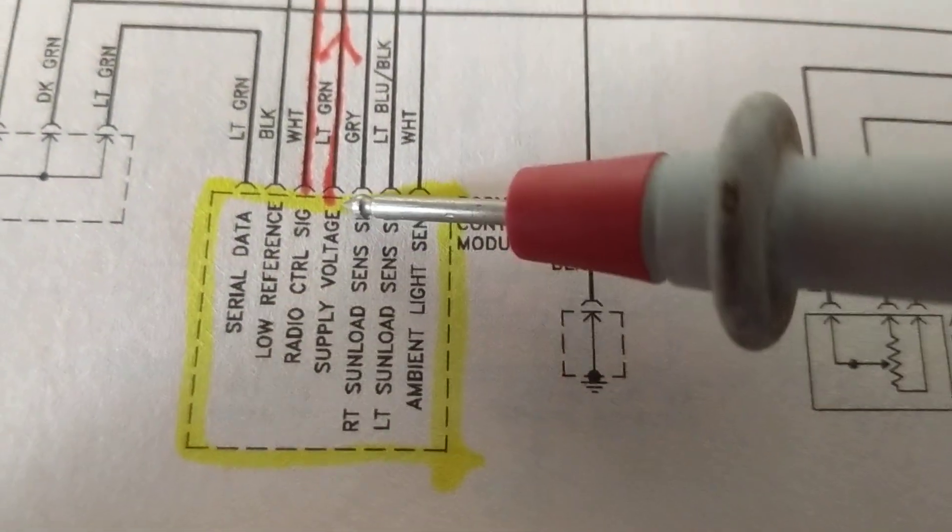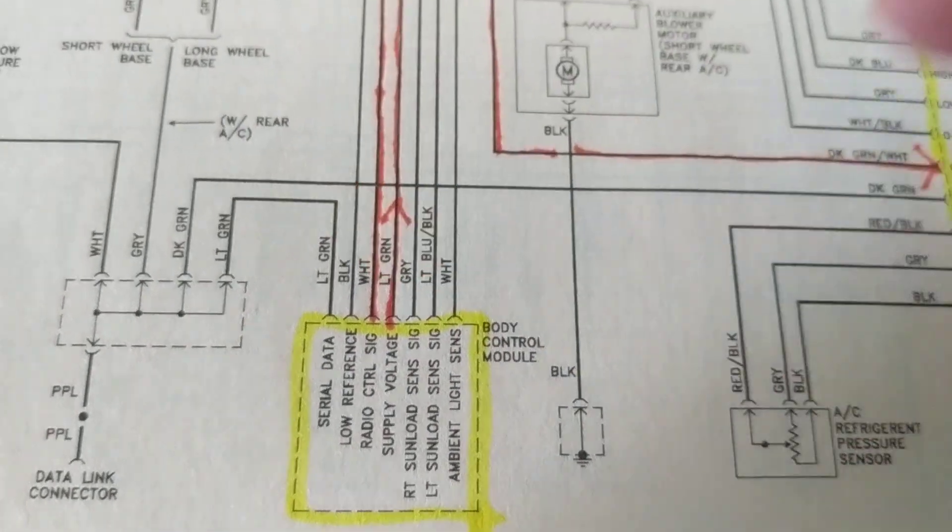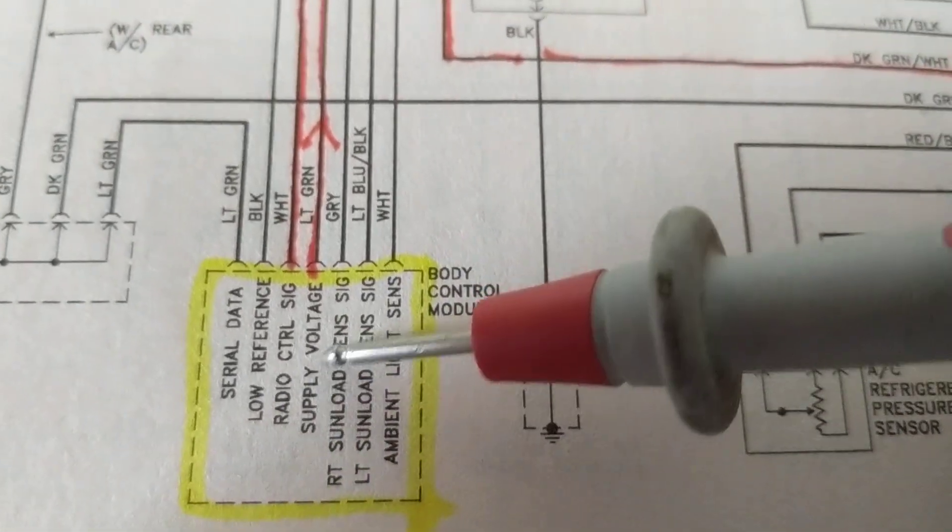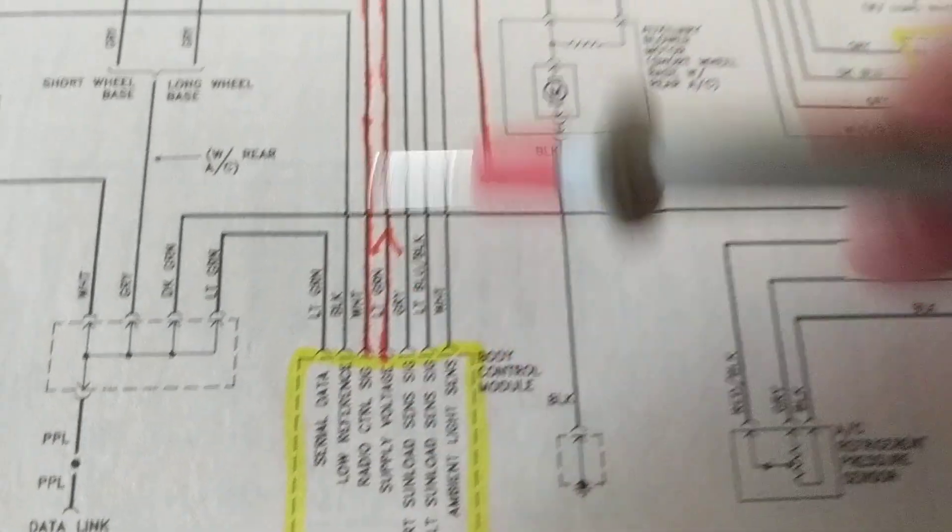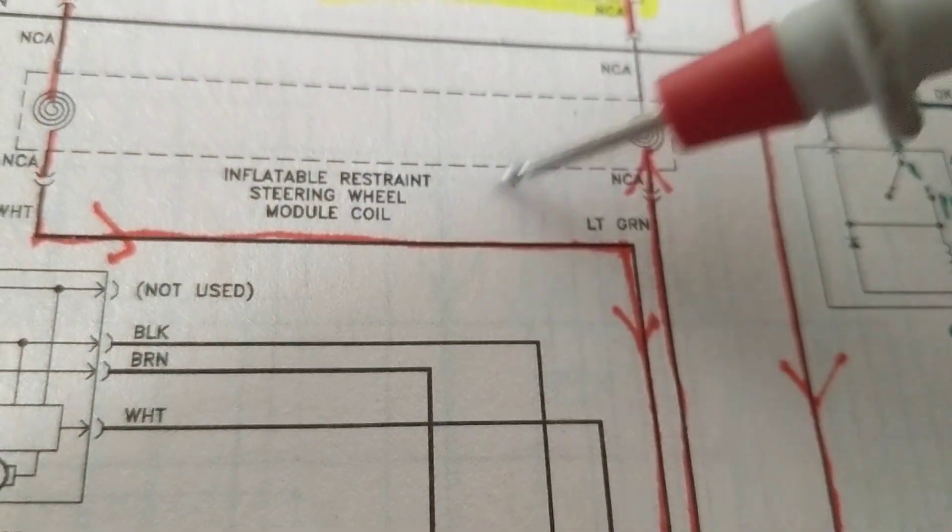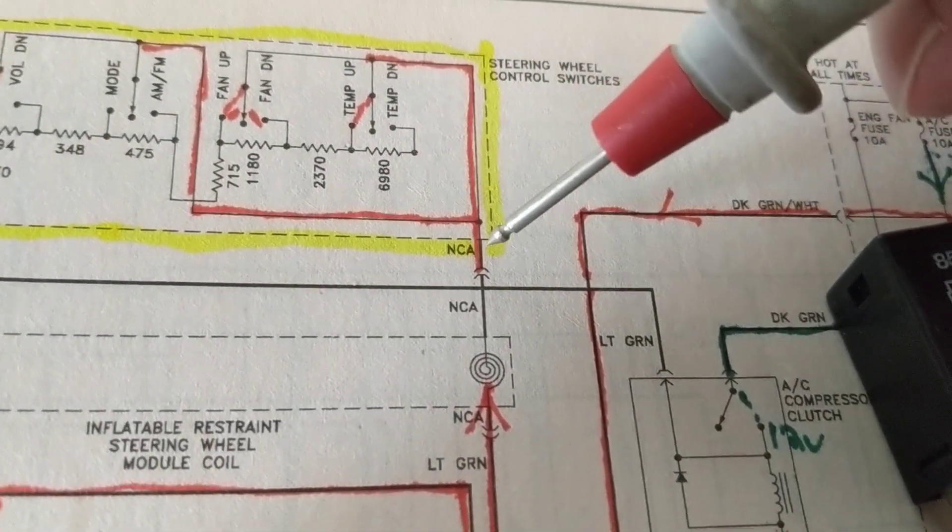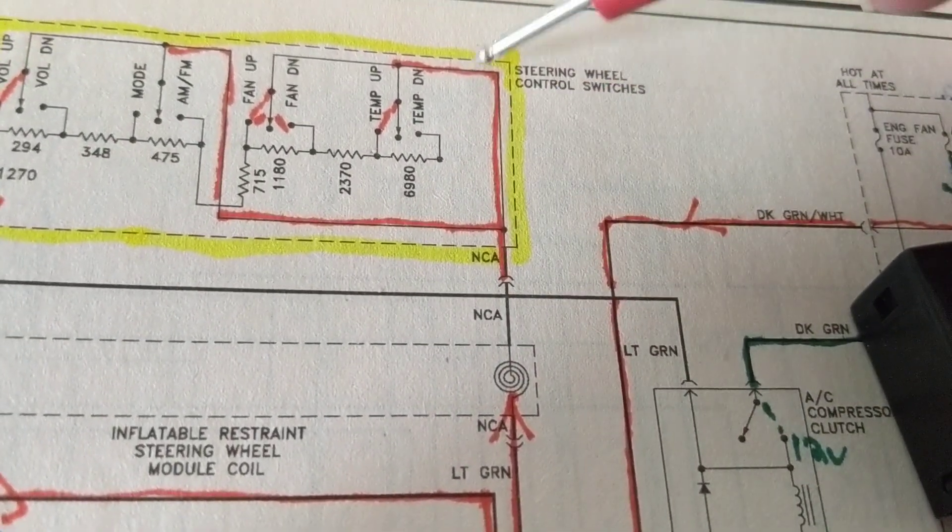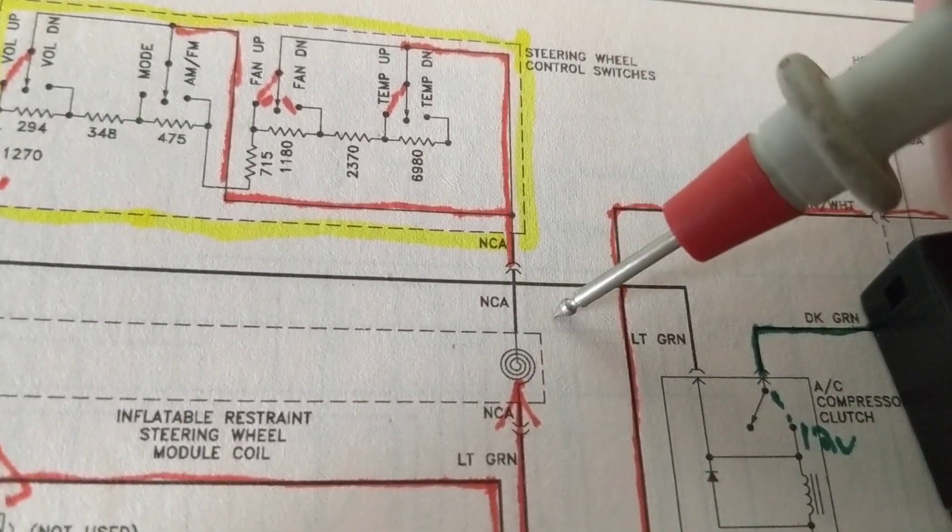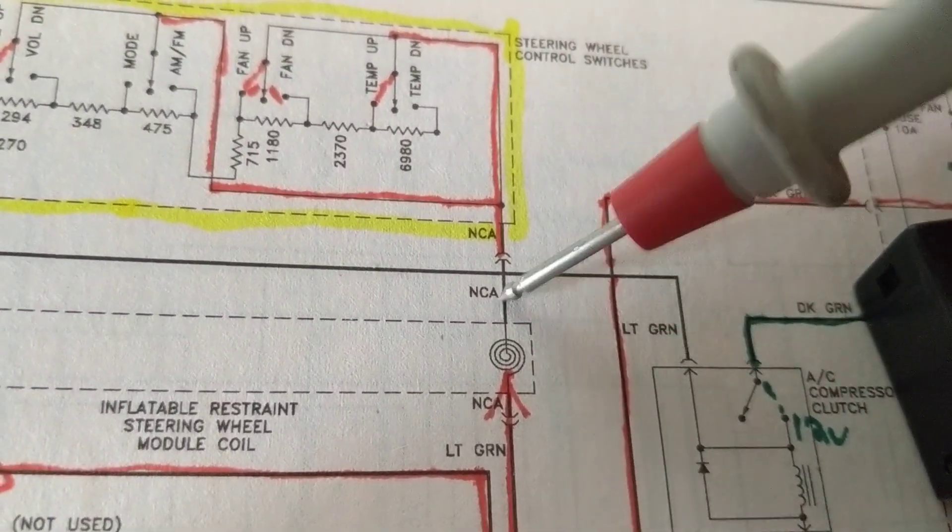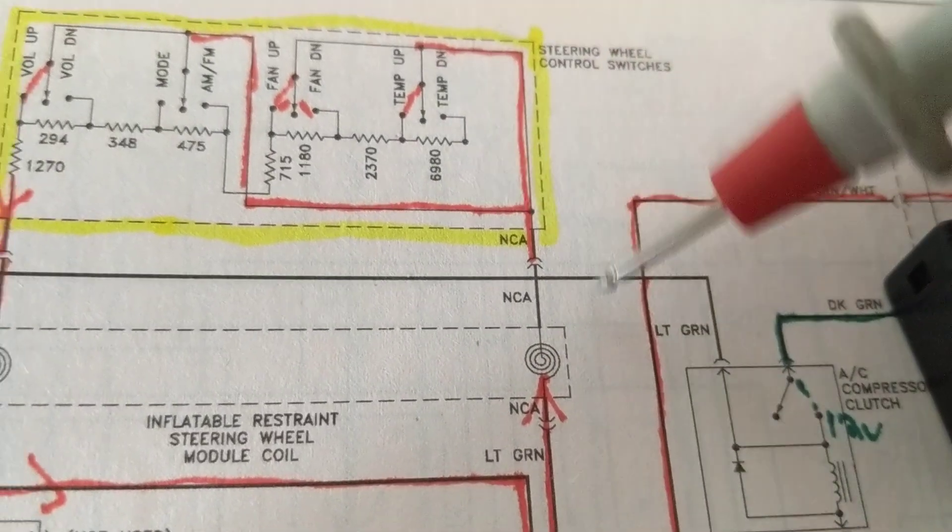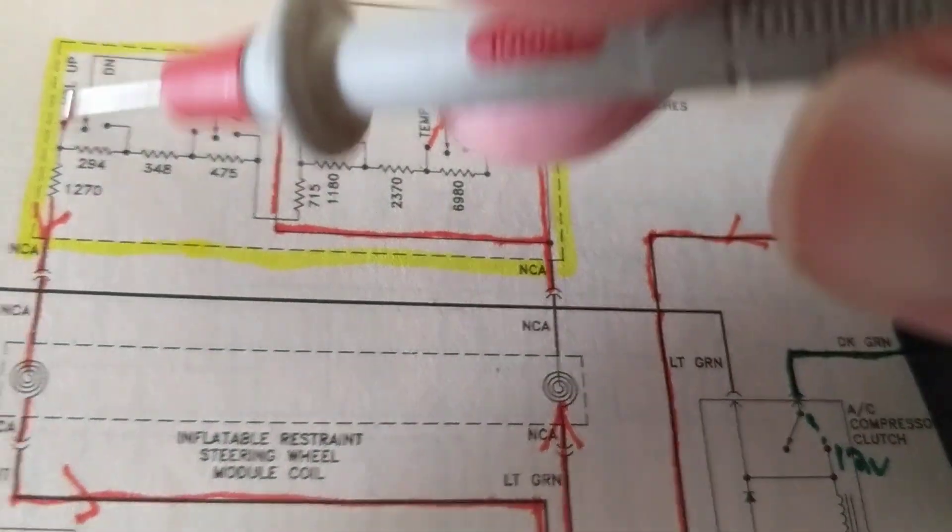He's giving a B plus supply voltage, low reference to the ground, serial data is a telephone line like I told you, that's how he communicates to other modules. That supply voltage is at 12 volts. He gives it 12 volts, follow the line, he gives it 12 volts through this something called inflatable restraint steering wheel module coil. That is a mechanism that we can put in the steering wheel that we can have current flow and it doesn't interfere mechanically with the controls of the steering wheel. NCA, no color available, no color associated. We don't know the color of this. We go from light green to whatever this color is, we don't know what the color is. We go over here to this switch, to the switches over here.